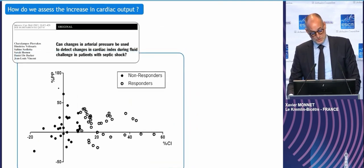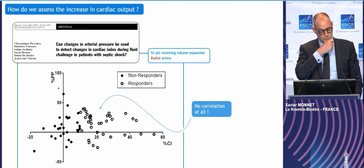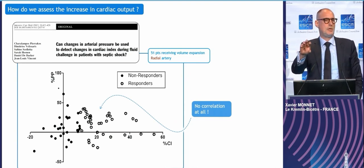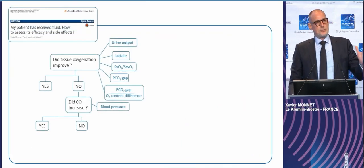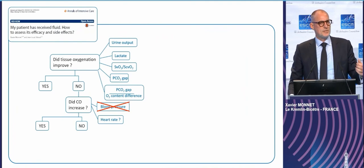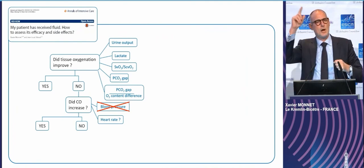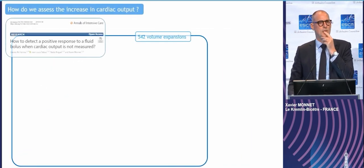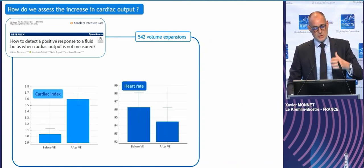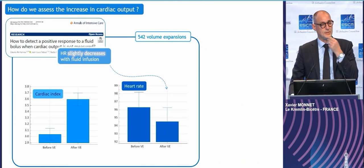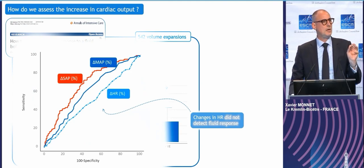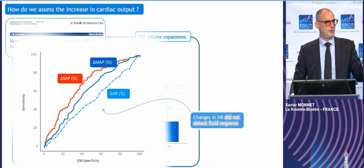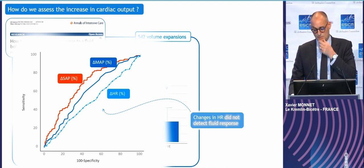We even have worse results from a study by the team of Jean-Louis Vincent: after a fluid bolus, there was no correlation between the changes in cardiac index and the changes in pulse pressure. So blood pressure is not precise enough. Some colleagues say they just look at heart rate — if it decreases, the patient responded to fluid infusion. But as observed in a large population receiving fluid boluses, when cardiac index increases, heart rate decreases only very slightly — about two points on average — and these changes are very heterogeneous. Changes in heart rate do not precisely assess fluid response.